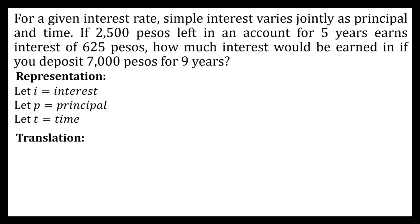Since we use the word 'varies jointly,' we're going to have a joint variation. We can translate this as: interest is equal to the constant of variation times the principal times the time. So our equation will be I is equal to K times P times T.